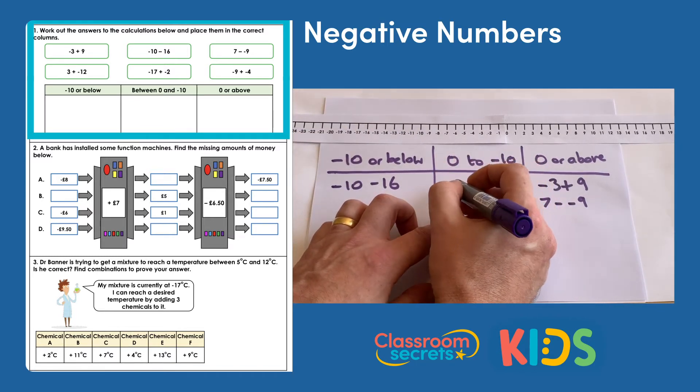Let's pick the biggest chemical first: chemical E increases temperature by 13 degrees Celsius. Then chemical F adds another 9 degrees Celsius, giving a total increase of 22 degrees — bringing us from negative 17 to 5 degrees Celsius. We only need one more degree, so picking chemical A adds 2 more degrees, putting us at 7 degrees Celsius. So the three chemicals Dr. Banner could pick are E, F, and A.